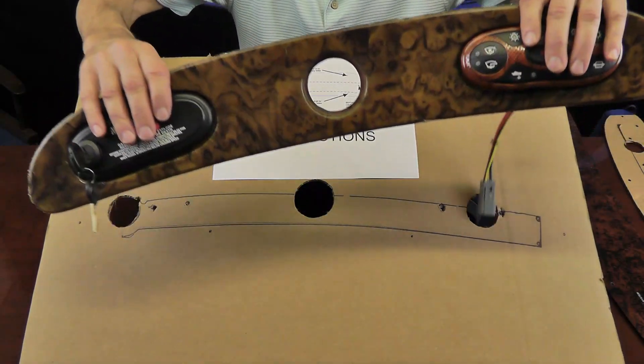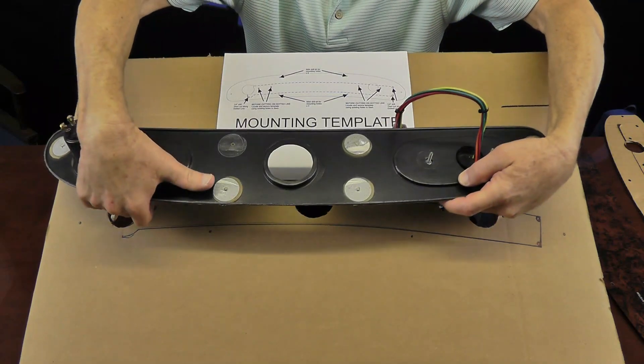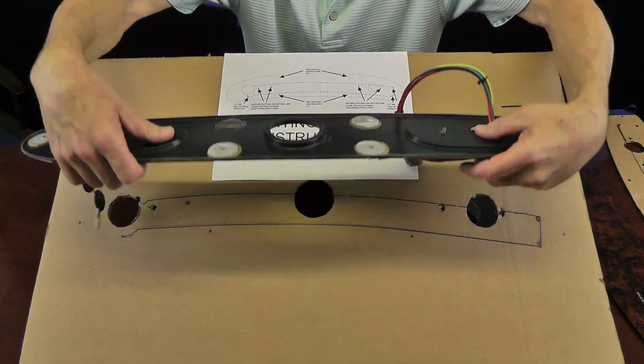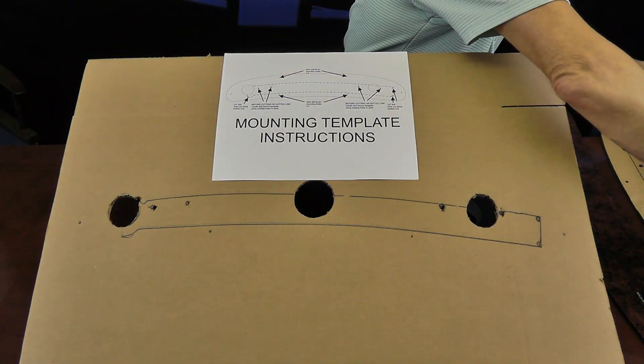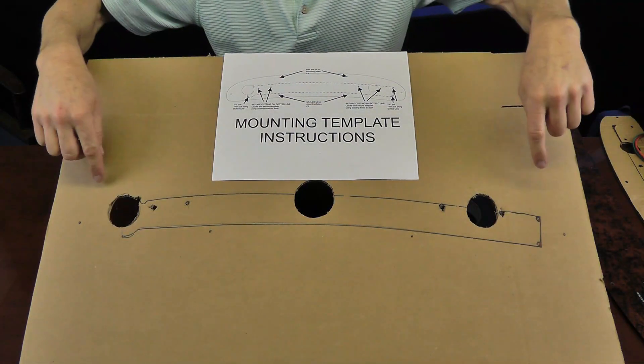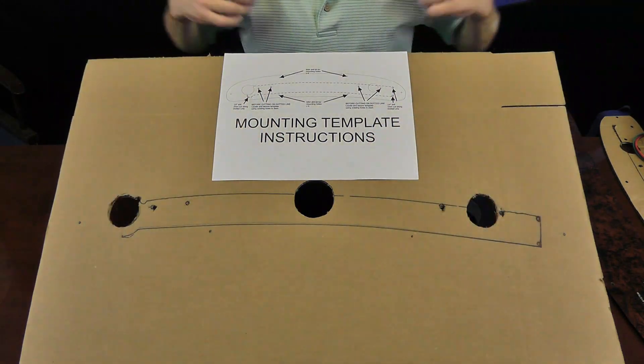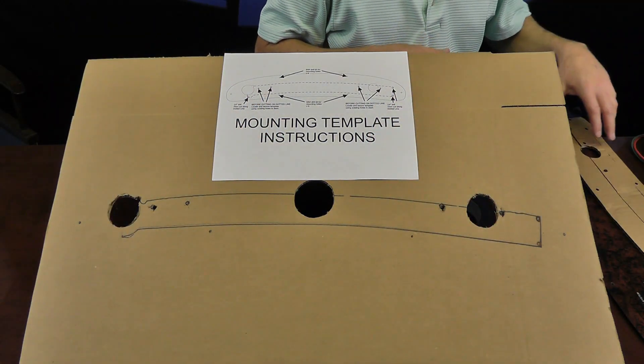This particular panel, the mounting studs have been removed already, but that's where they would be placed, where you see those silver circles. So once this is removed, your dash panel will look very similar to this. It won't have the scribe lines, of course. That's what we make with the mounting template.